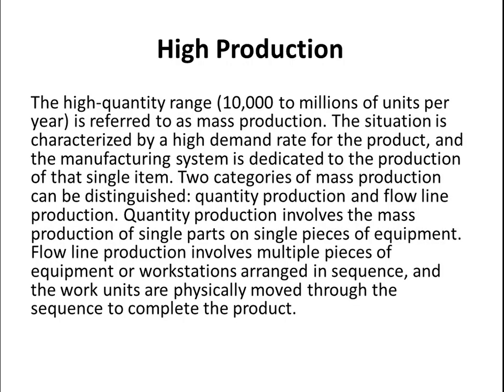The last one is high production. From the word high, we can understand the production rate is very high — that is 10,000 to one million per year. The high quantity range is referred to as mass production. This situation is characterized by a high demand rate for the product and the manufacturing system is dedicated to the production of a single item. Two categories of mass production can be distinguished: quantity production and flow line production.